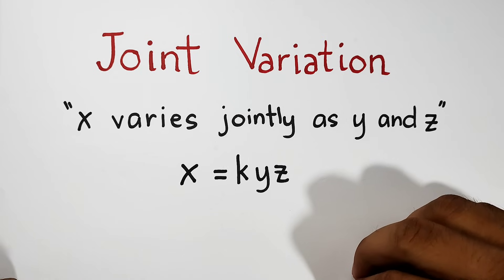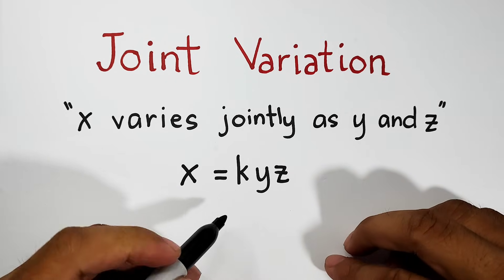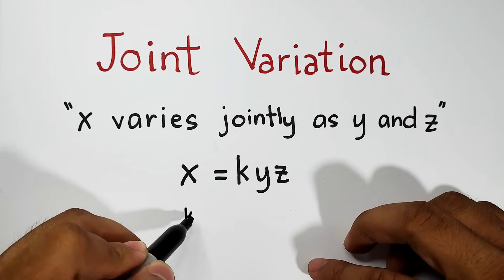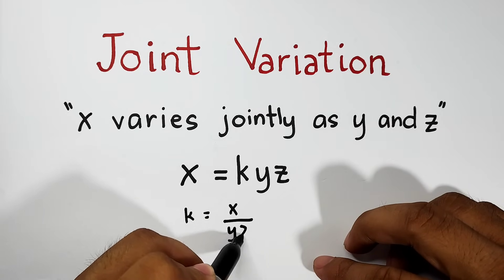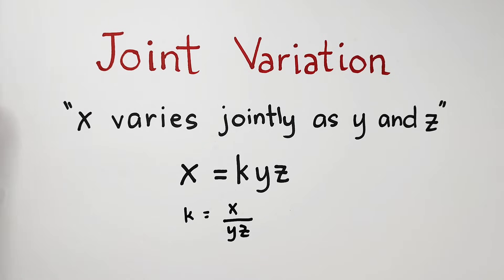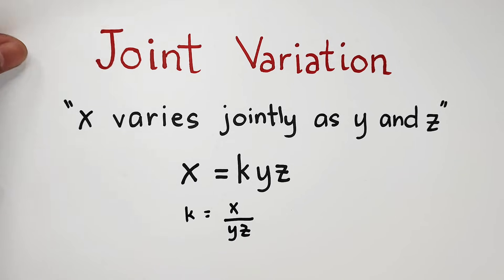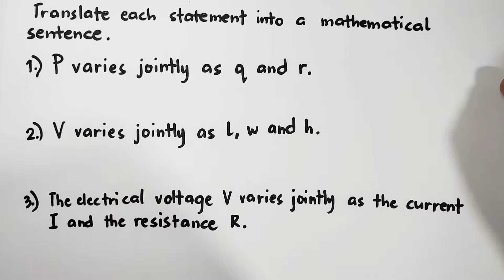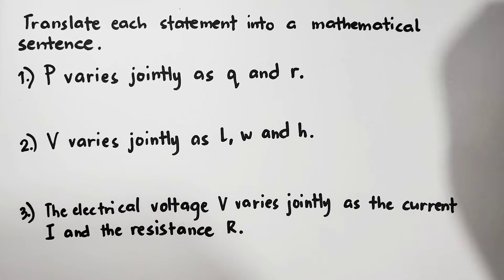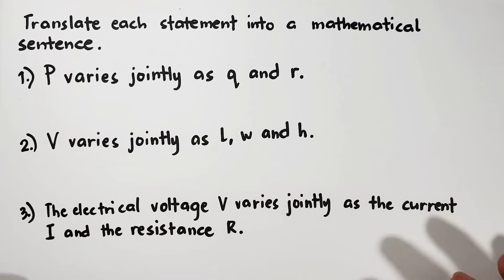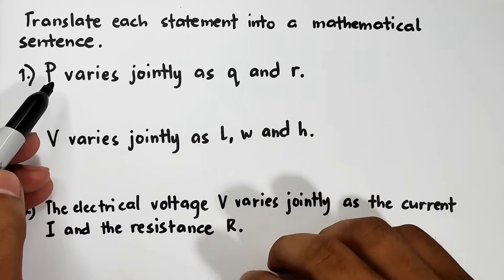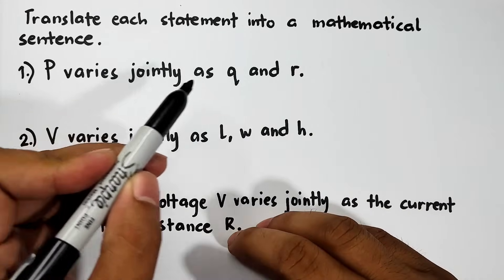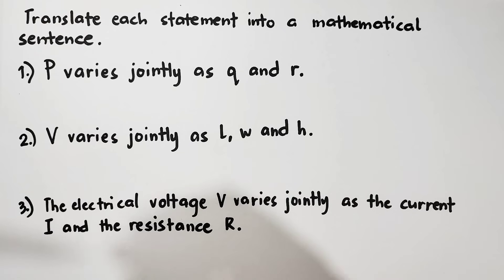If you will solve for the constant of variation, this is our formula. So the first thing that we need to do when it comes to variation is to know or to master how to translate statements into mathematical sentences. We have here: p varies jointly as q and r. So the question is, how are we going to translate this into a mathematical sentence?